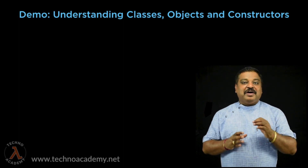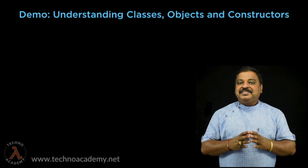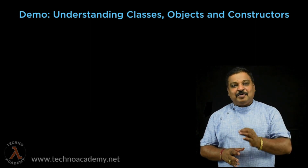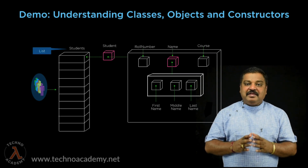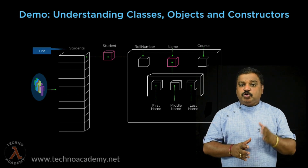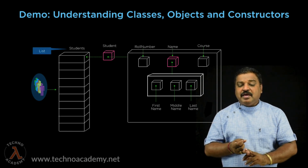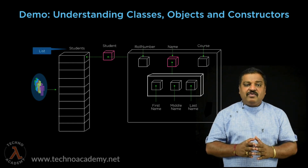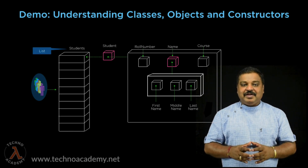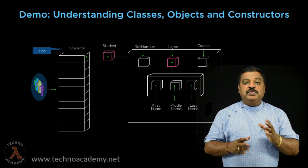In the last two videos we have understood what is a class, what are objects, and constructors. In this video, let us try to implement the same scenario which we have discussed. The requirement is to maintain a list of students where every student should have the details of role number and student name, where the student name should be in the format of first name, middle name, and last name, along with the course in which the student is enrolled.